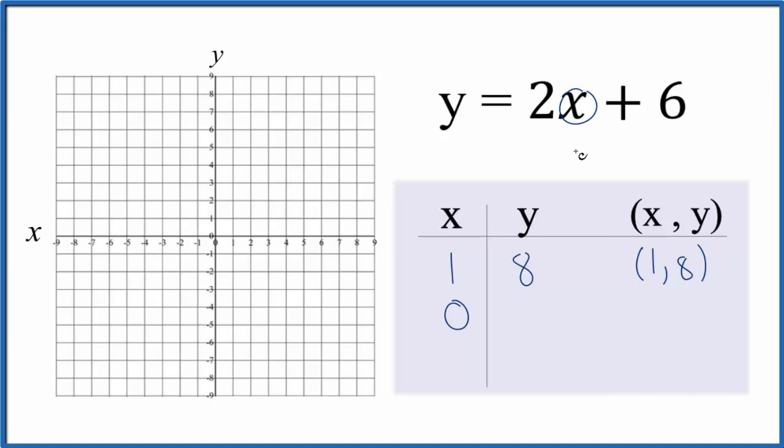For x = -1, 2 times -1 is -2, and -2 plus 6 equals 4, so we have (-1, 4). We could have done just two points, but I like to do three in case I'm making an error somewhere—I'll spot it pretty quickly.